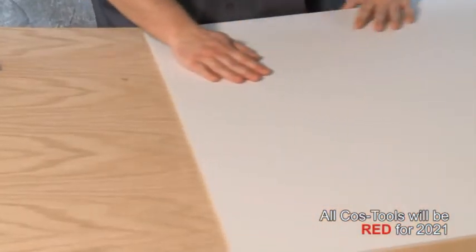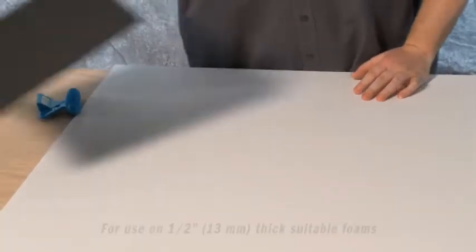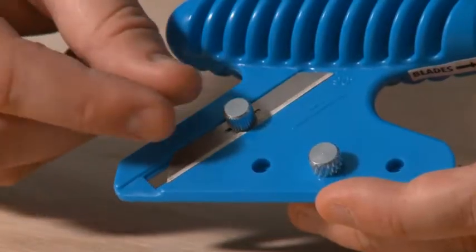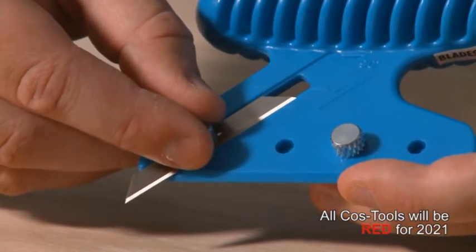To use the CosTool straight bevel cutter, always use foam board underlayment under the foam you are cutting. Extend the blade out and use the reference marks on the tool to set the depth.